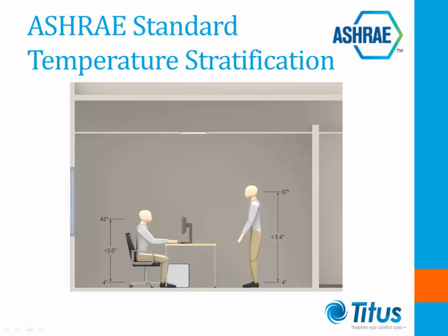Standard 55 also defines the limit for temperature stratification in the occupied space. An earlier version of the standard limited the temperature rise for a standing occupant to no more than 5.4 degrees Fahrenheit from the ankle level — 4 inches above the floor — to the neck level at 67 inches above the floor. For a seated occupant, the requirement was no more than 3.6 degrees from ankle to neck level at 43 inches above the floor. For the 2013 edition, the limit is 5.4 degrees F from ankle to neck level, and if all occupants are seated, the 5.4 degrees Fahrenheit is allowable to the 43-inch level.